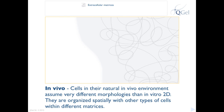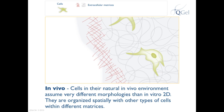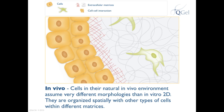First, you have the extracellular matrix. Cells growing in the extracellular matrix are shown here. However, in vivo, multiple variants of extracellular matrix may coexist, shown here. This may provide the right environment for another cell type to grow, and perhaps another.